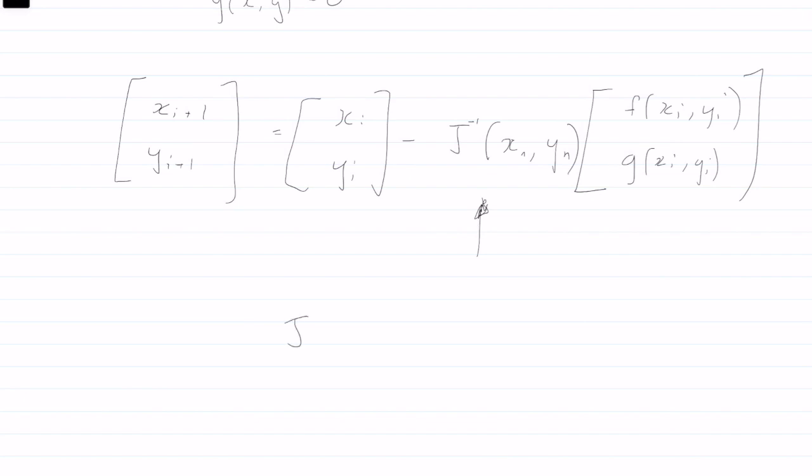So the Jacobian, it's essentially the partial derivative of your first function in terms of x, and then the partial derivative of the same function in terms of x2,